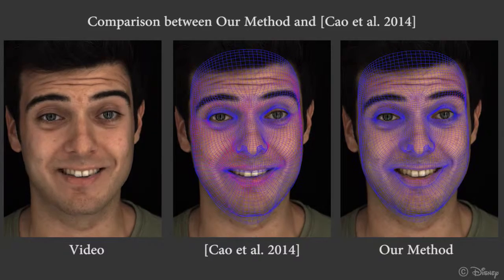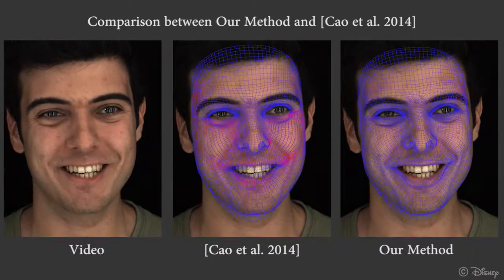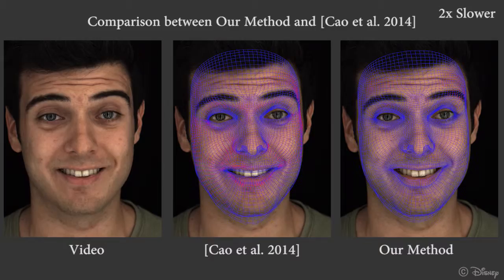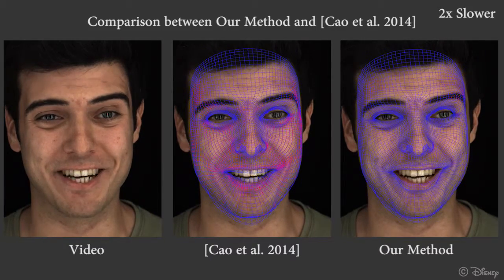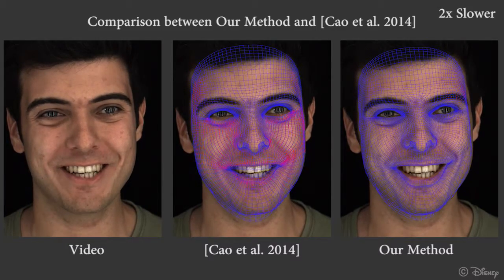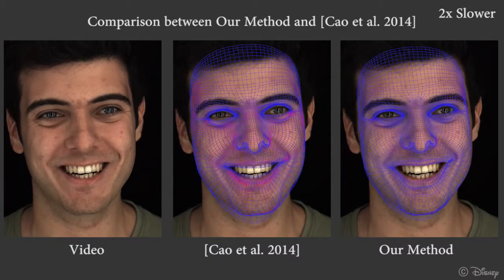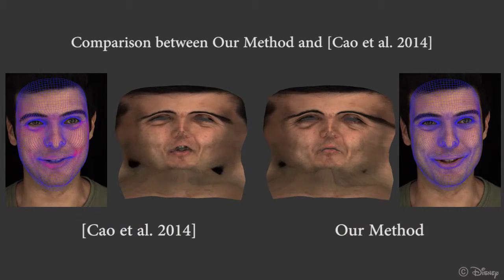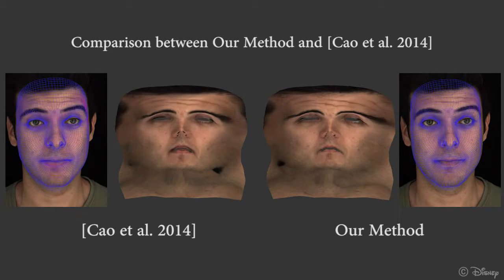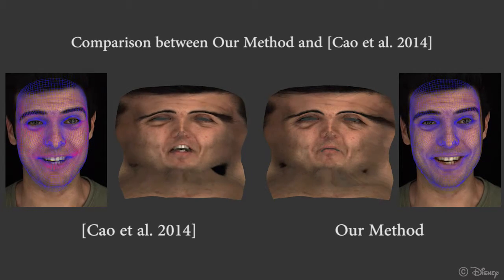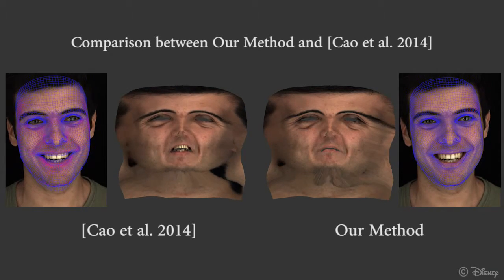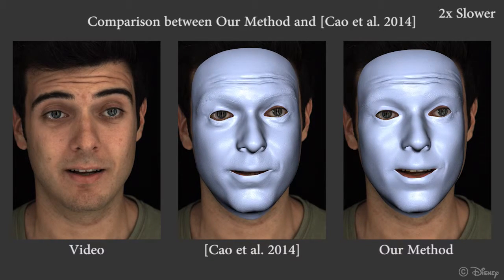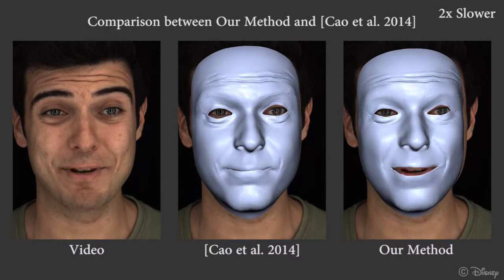We compare our improved low-resolution tracking to the output of the global model which comes from Cao et al. Red locations indicate tracking error, which can be seen also in the per-frame texture maps. If we generate the wrinkles without this coarse refinement step, there will be temporal noise and artifacts in the final results.